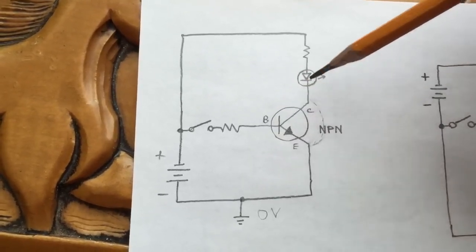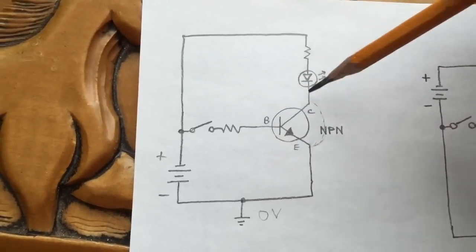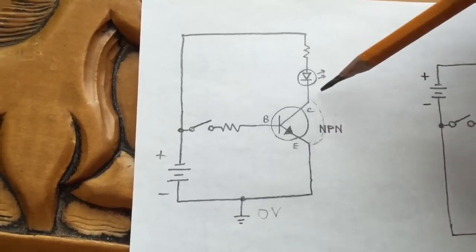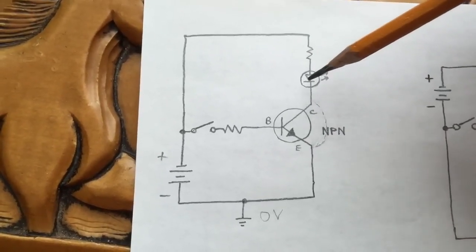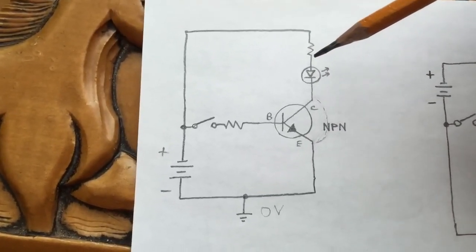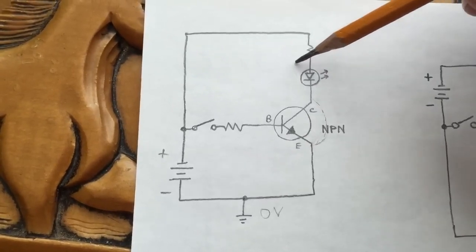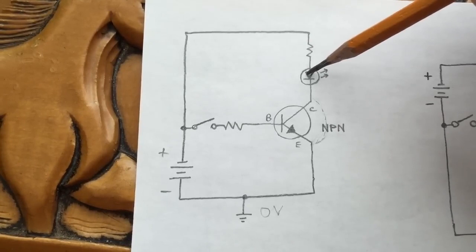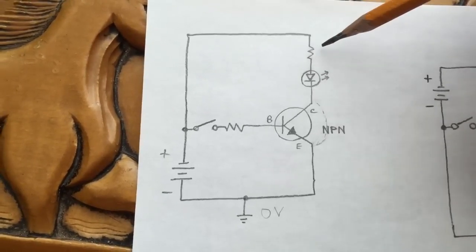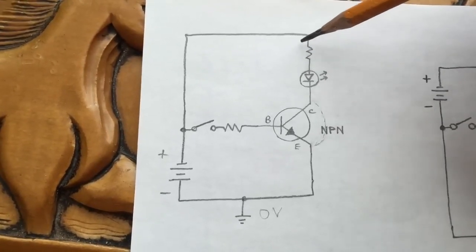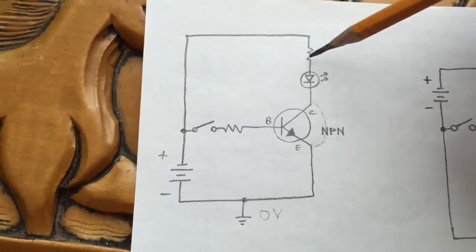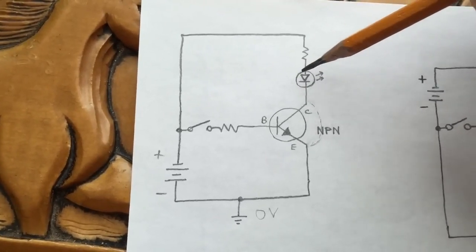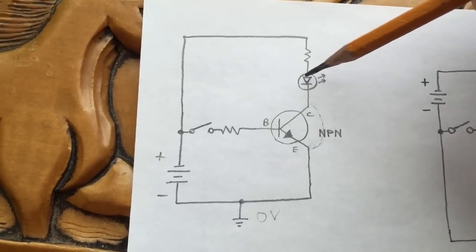Once the transistor is turned on, a larger current will be able to flow from the collector to the emitter. We can use that to light an LED, activate a relay, turn on a motor, and so on. To protect the LED, we have a current limiting resistor — in a 5 volt circuit, maybe 470 ohms. We typically run about 10 to 20 milliamps through an LED to light it up brightly.